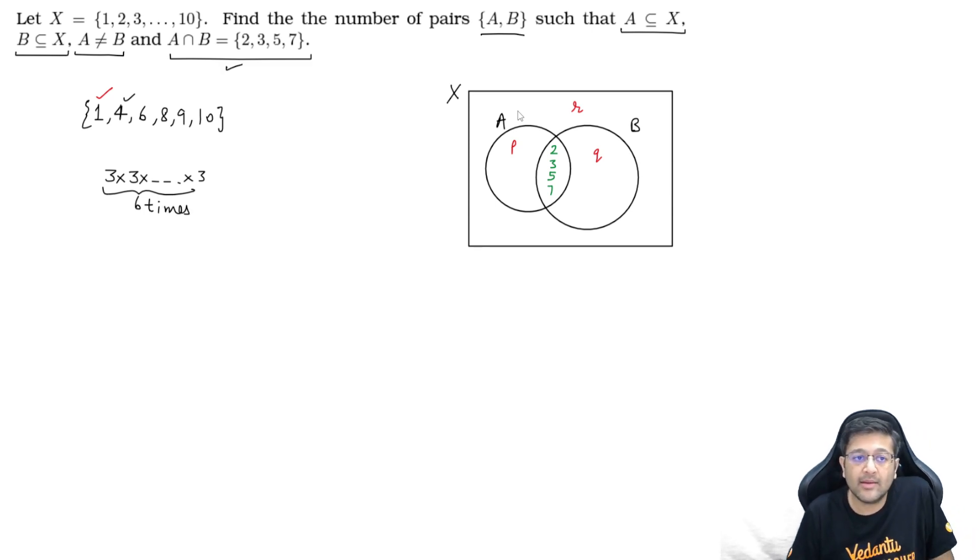The question also says that A should not be equal to B. The condition A is not equal to B will not be satisfied by what we are doing. Giving p, q or r three options to each element. A subset of X, B subset of X, that is satisfied always. No problem there. It's always inside, because p is inside X. A is inside X, B is also inside X. So giving three options to each of the six elements, that is three power six. This is not the complete answer. Why?